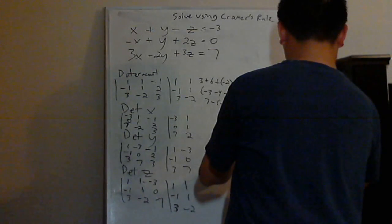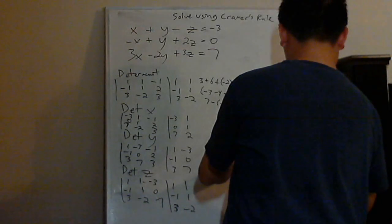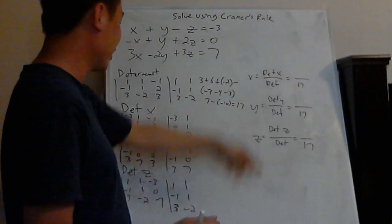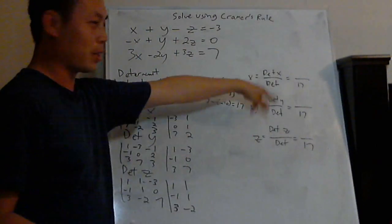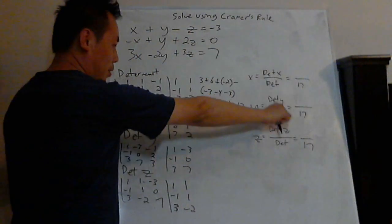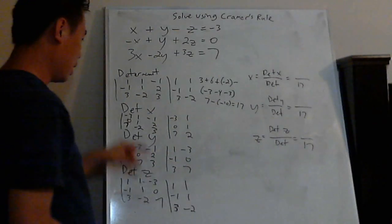So my main determinant is 17. Since x, y, and z all share the same denominator, I already know all four denominators are 17. Now I just need to calculate determinant x, determinant y, and determinant z.